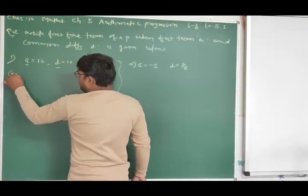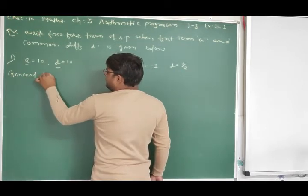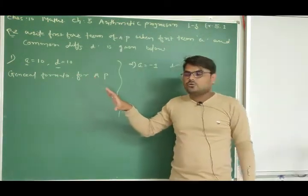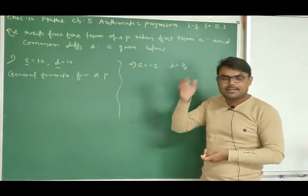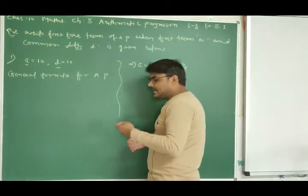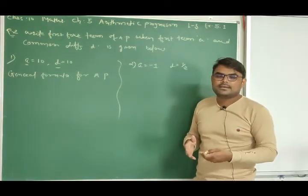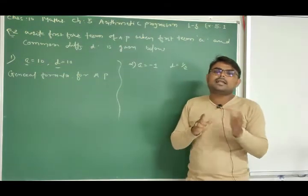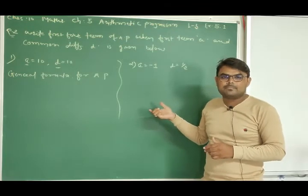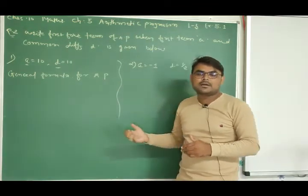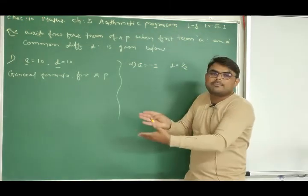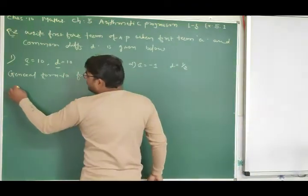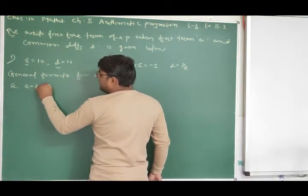We know the general formula for AP. The terms of an Arithmetic Progression — how they are written — we discussed in the first lecture also: each term of an Arithmetic Progression is obtained by adding a fixed number to its preceding term, except the first term. That fixed number is our common difference D.